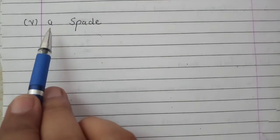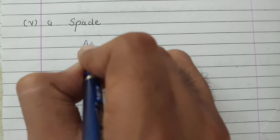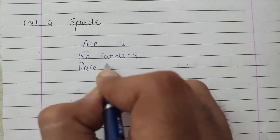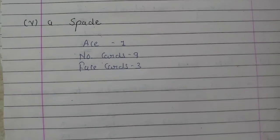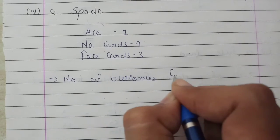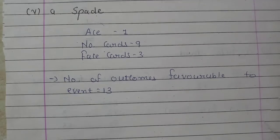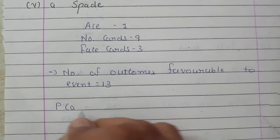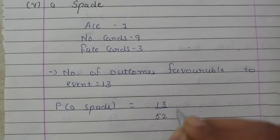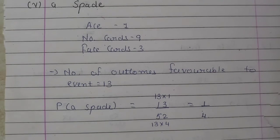Next is getting a spade. In spades there are a total of 13 cards - number cards and face cards. So the number of outcomes favorable to the event are 13. The probability of getting a spade is 13 upon 52. 13 and 13 cancel, leaving 1 upon 4.